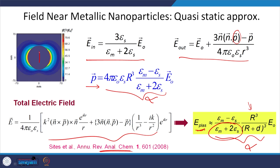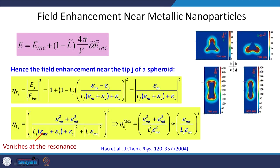If we have a dipole in this direction, the electric field is maximum at 90 degrees. When you have nanoparticles which are not spherical — for example, spheroids — the electric field is given by a relation with contributions from different dimensions, volume, and polarizability alpha. Solving for the field enhancement factor near any tip j of the spheroid, at different tips you will have different electromagnetic fields, because the denominator term vanishes at resonance, giving maximum enhancement.